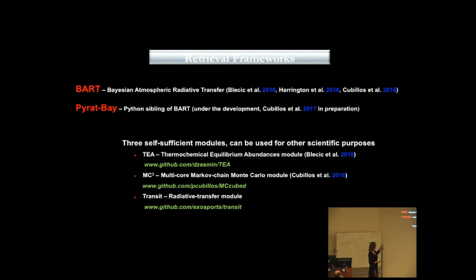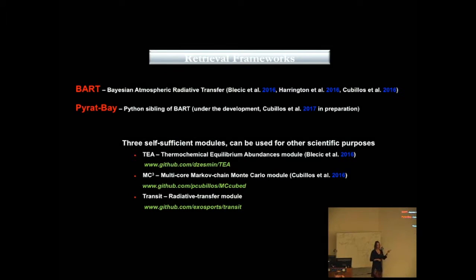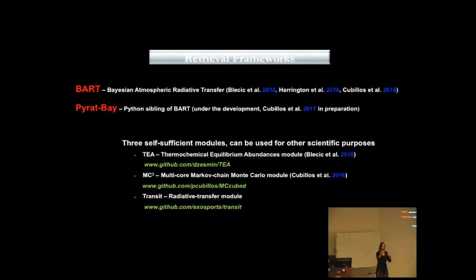They have three self-sufficient modules. All of these modules are open source codes that you can find online. The first is thermochemical equilibrium analysis code, TEA. The second is multi-core Markov chain Monte Carlo routine, which is differential evolution Markov chain routine. And the third one is the radiative transfer model, which is the 1D line-by-line radiative transfer module that generates the models of the planetary atmosphere based on the eclipse or transit geometry.